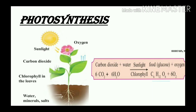Plants make their food in their leaves using water and nutrients from the soil and carbon dioxide from the air. This process is called photosynthesis. Photosynthesis is a process used by plants to make their own food. We can also say that light energy is converted into chemical energy, which is used by plants for their growth and nourishment.